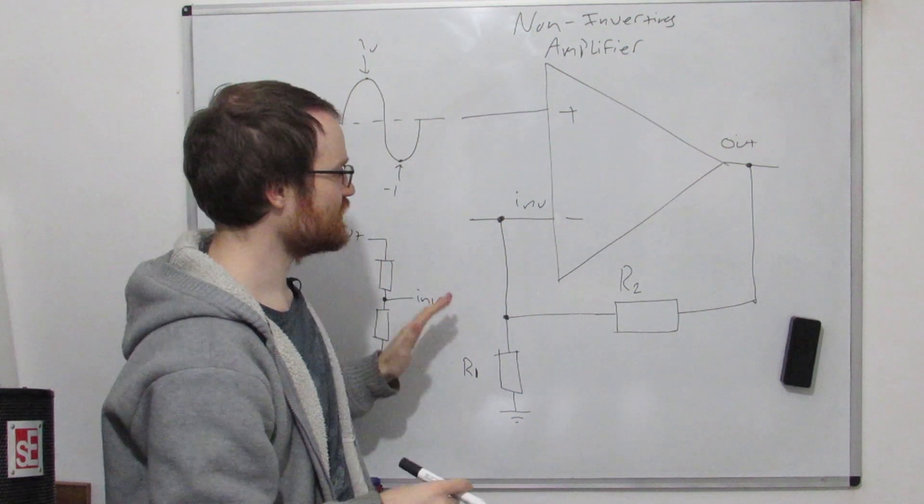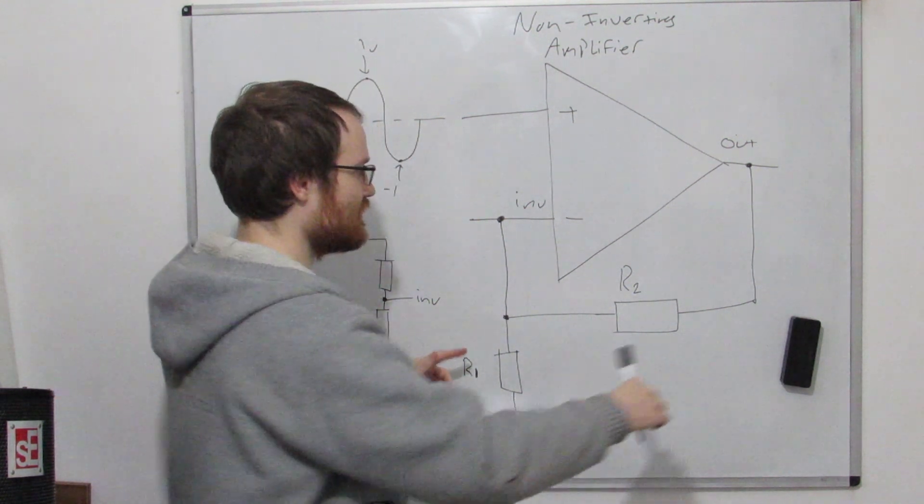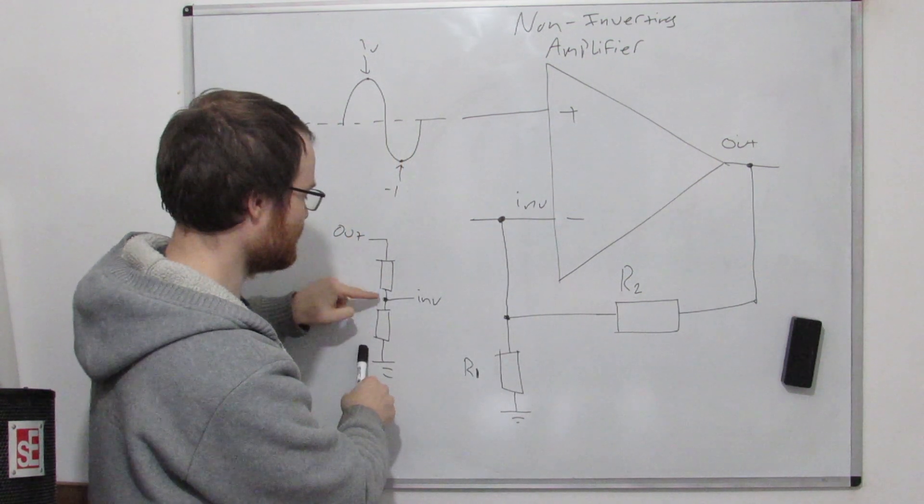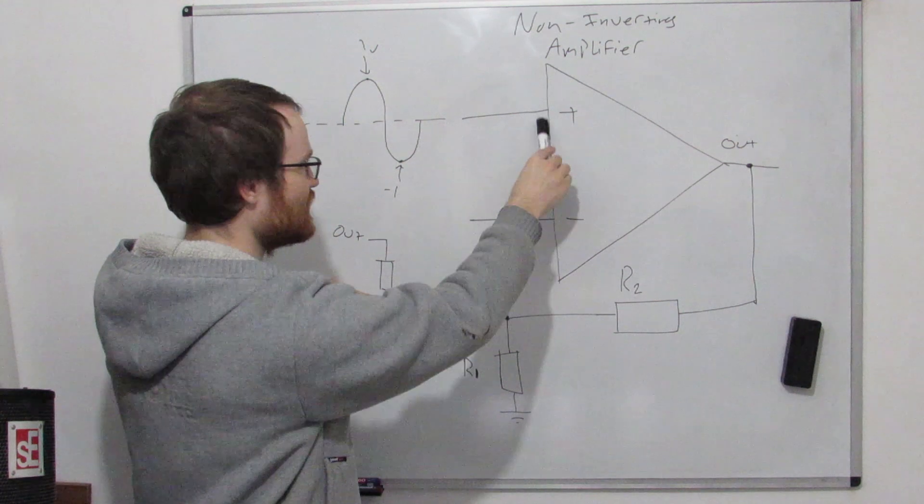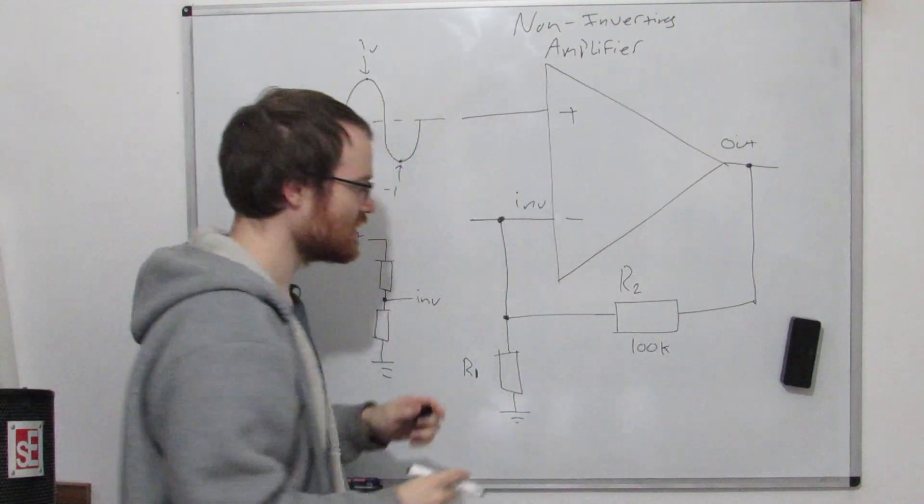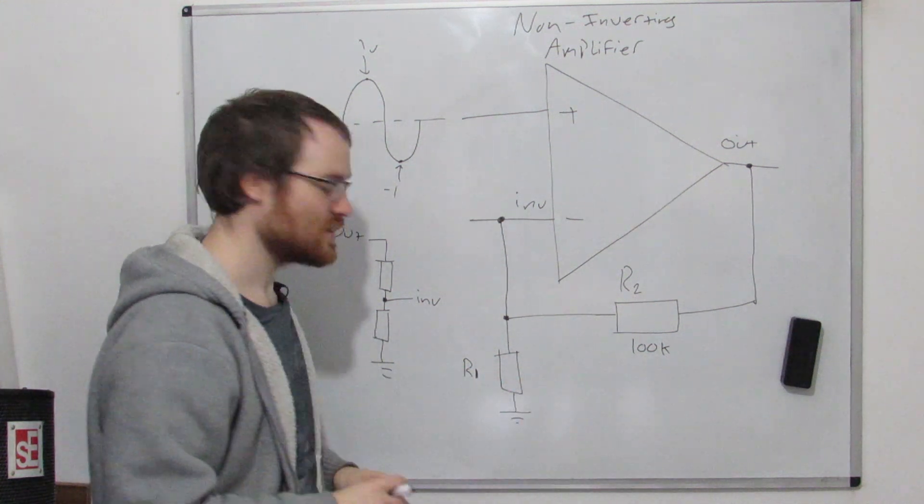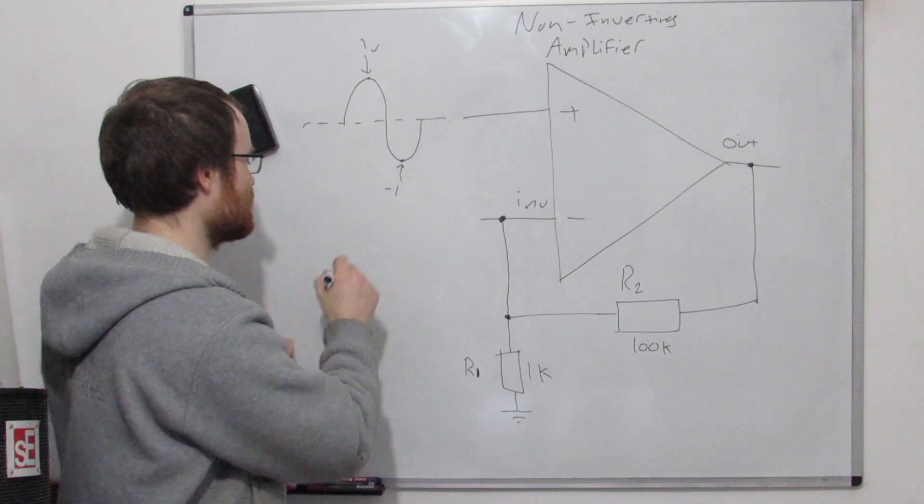And so what it needs to do is drop enough voltage across this whole voltage divider to make this point the same as this point. Input is at one volt, let's say this is 100 kilo ohms, this is R2, and let's say that R1 is one kilo ohm. To cut a long story short, this circuit has to output 101 volts at the output to make this part here one volt,